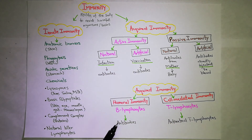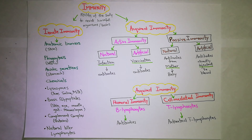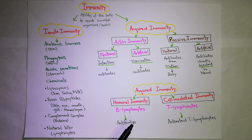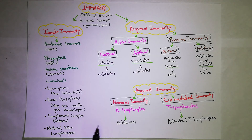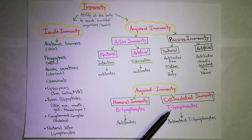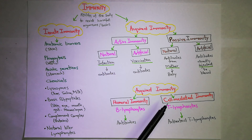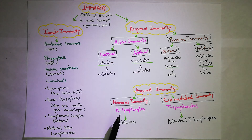Now acquired immunity can be further classified with reference to types of lymphocytes. Basically, immunity in this chapter is lymphocyte-dependent. Lymphocytes are of two types: B lymphocytes and T lymphocytes. B lymphocytes are pre-processed in the bone marrow. When B lymphocytes are involved, we call it humoral immunity. When T lymphocytes are involved, we call it cell-mediated immunity. The whole chapter covers the mechanisms of humoral immunity and cell-mediated immunity.